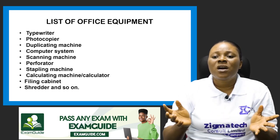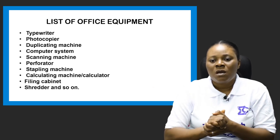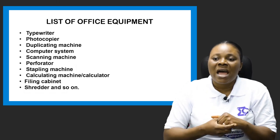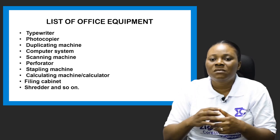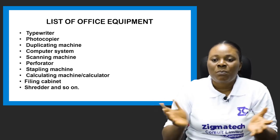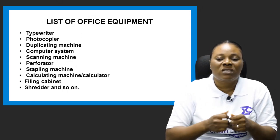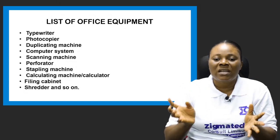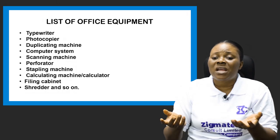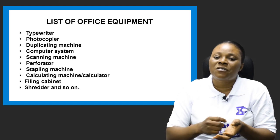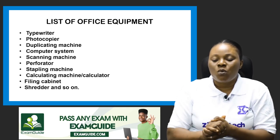Now let's look at various office equipment that can be found in an establishment. It's not just limited to this — we have so many of them, but we'll just list these out. We have the typewriter, the photocopier machine, the duplicating machine, the computer system, the scanning machine or scanner, the perforator or perforating machine, the stapler or stapling machine, the calculating machine or calculator, the filing cabinet, the shredder, and even our simple stationeries, which are also office equipment because they are used for writing, ruling, or erasing.